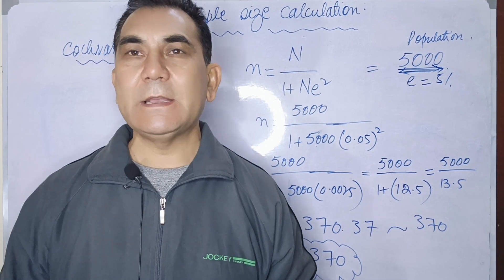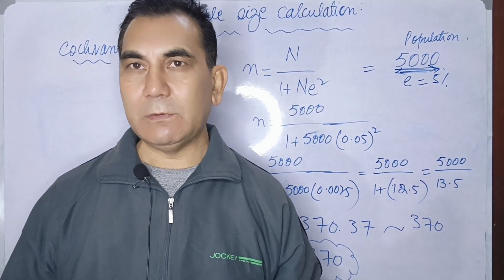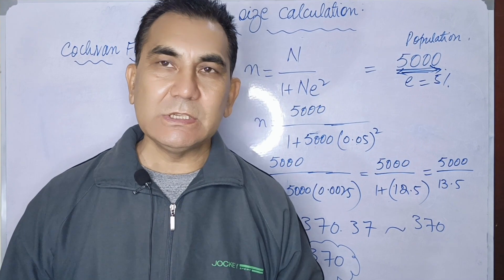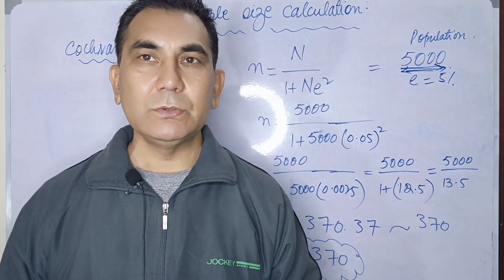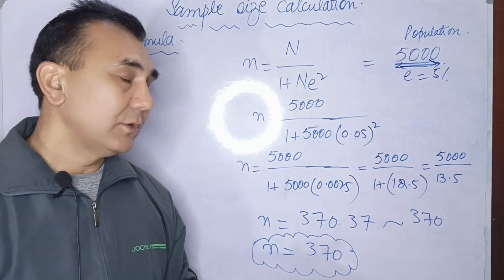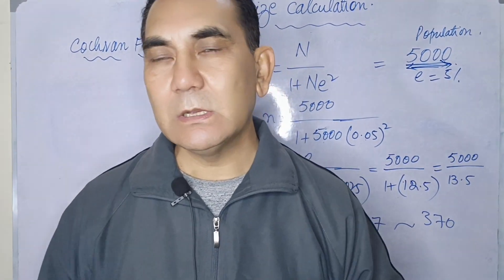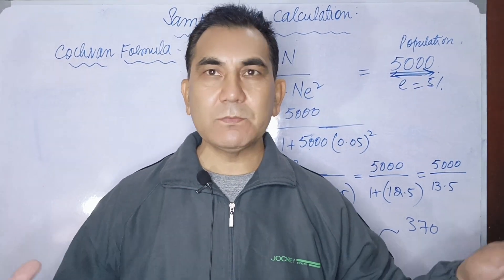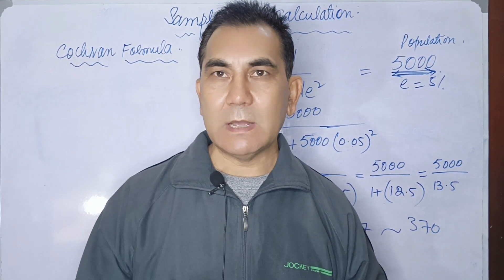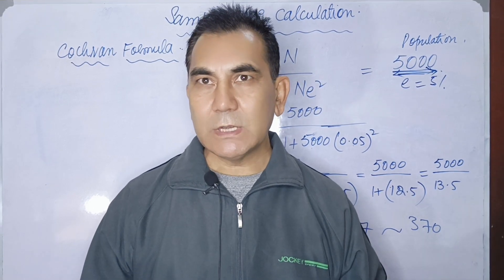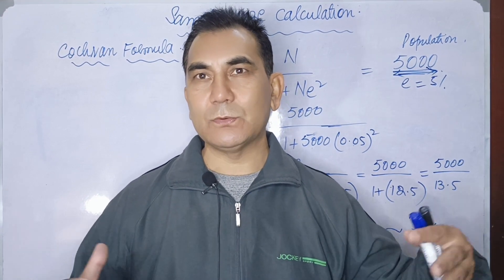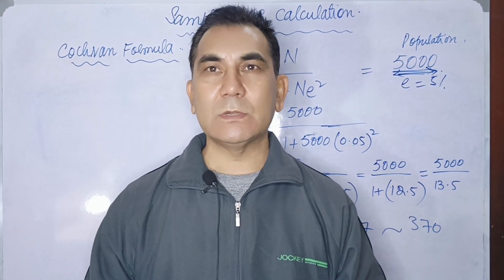I hope this has clarified your concept of how to calculate sample size for cross-sectional study designs and prevalence study designs, given confidence interval, prevalence or proportion, and bound of error — using the Cochrane formula. I request you to watch my epidemiology video lectures to enhance your knowledge. Please subscribe to my YouTube channel and press the bell icon to get notified of new lectures. Thank you so much, take care.